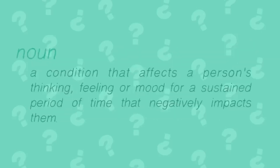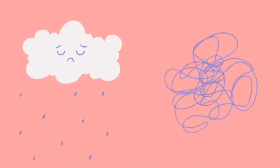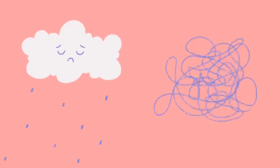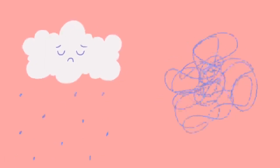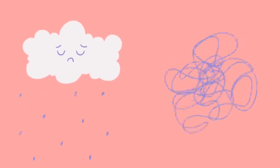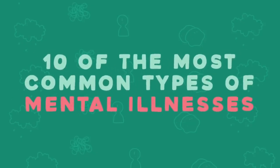What is mental illness? According to the National Alliance on Mental Illness, it's defined as a condition that affects a person's thinking, feeling, or mood for a sustained period of time that negatively impacts them. Is depression a mental illness? What about anxiety? Yes, they are. In fact, they're the most common types of mental illnesses. In this video, Psych2Go covers 10 of the most common types of mental illnesses.